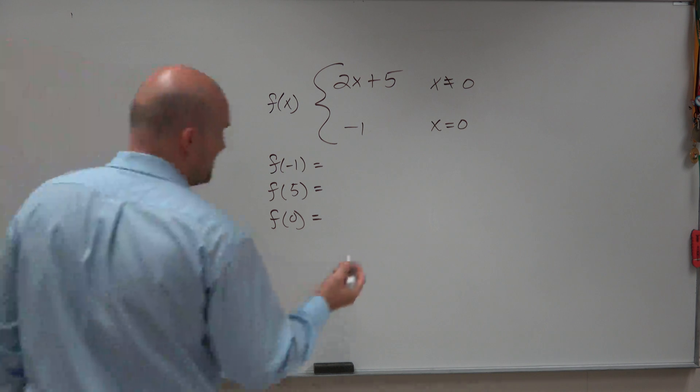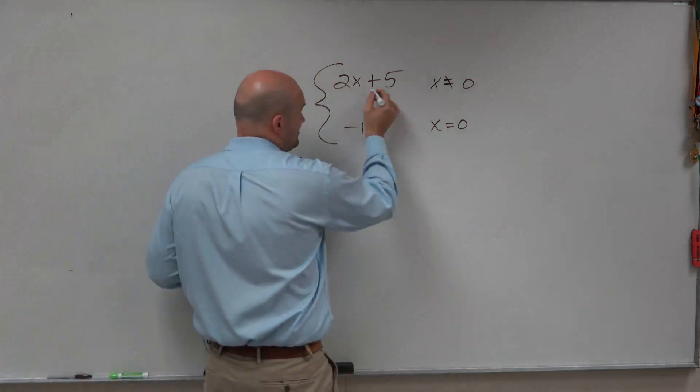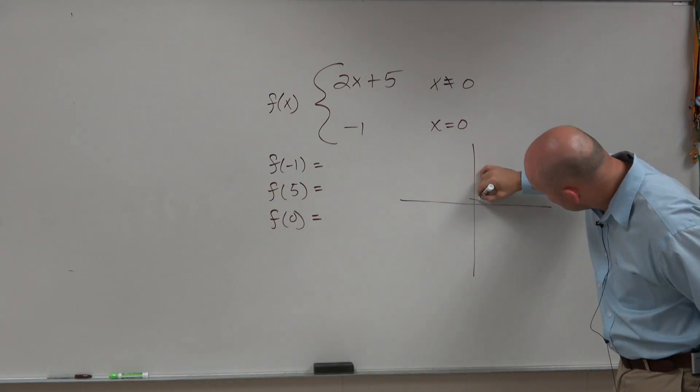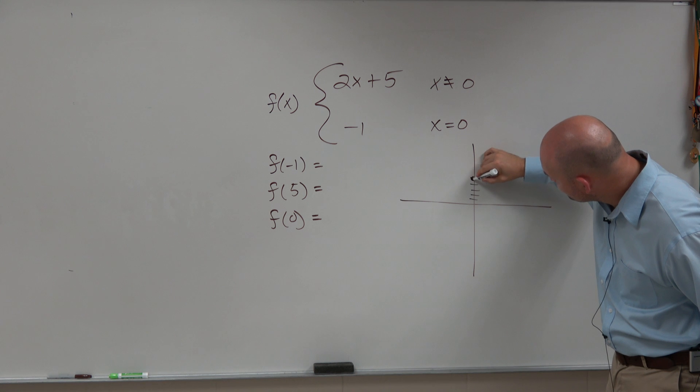Now, again, when graphing this, ladies and gentlemen, you can see here 2x plus 5. We should not have a problem graphing 2x plus 5. We go to the y-intercept, 1, 2, 3, 4, 5. Make a nice little dot.